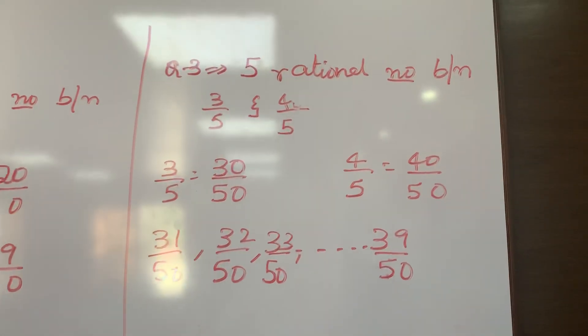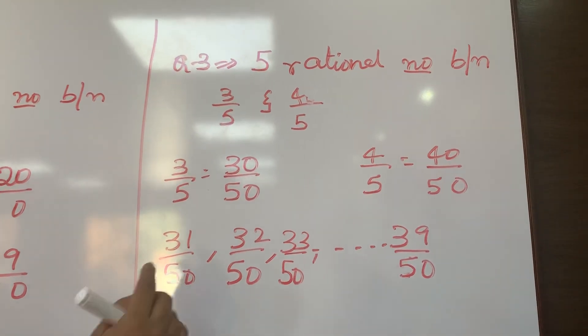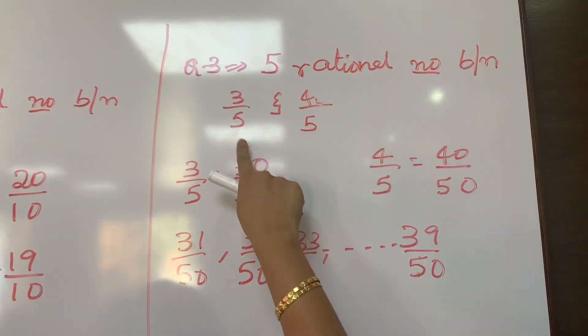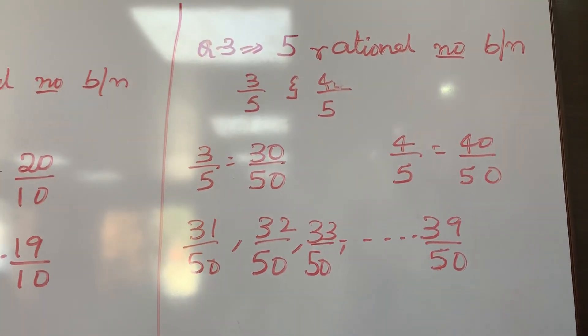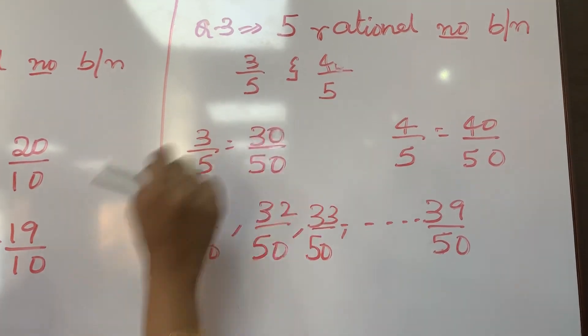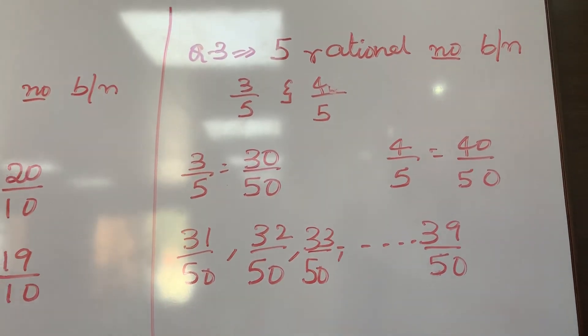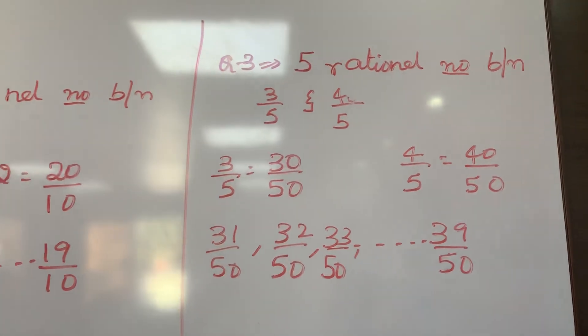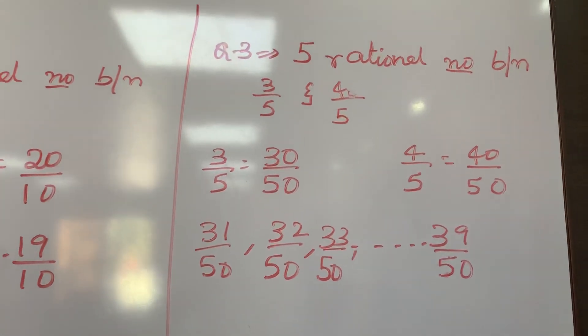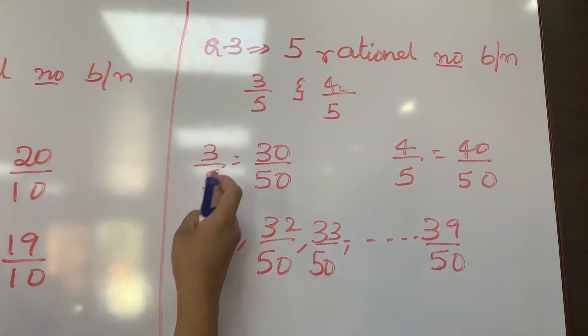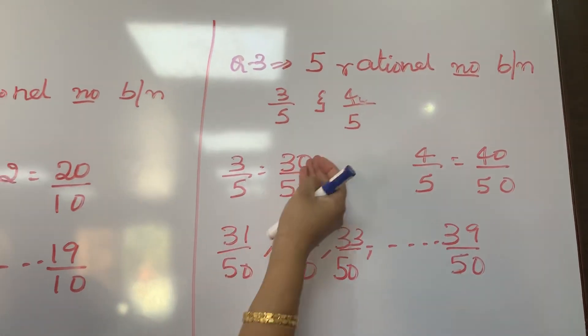Now next question in NCERT, question 3, find 5 rational numbers between this. Now till now we did was all natural numbers. Now they have given in fraction form. Find 5 rational numbers between 3 by 5 and 4 by 5. Now same way, 3 by 5 just add 1 zero. We can write it as 30 by 50.